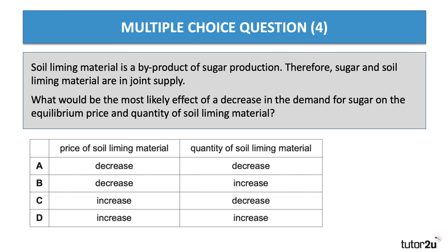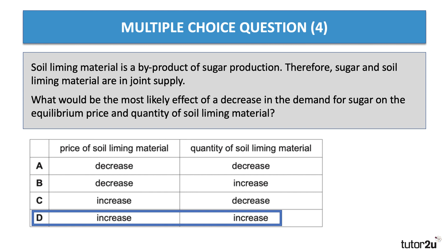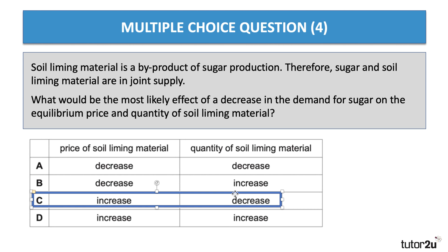In the production of sugar, soil liming material is supplied as a byproduct. The more sugar that's produced, the greater will be the quantity of soil liming in the market. We're told there's a fall in the demand for sugar, and therefore you'd expect sugar production to contract. Therefore you'd expect the byproduct supply of soil liming to go down — the quantity of soil liming material will decrease. Other things being the same, if the quantity of soil liming material is in shorter supply, you'd expect the price of that soil liming material to go up because it's now in scarcer supply.